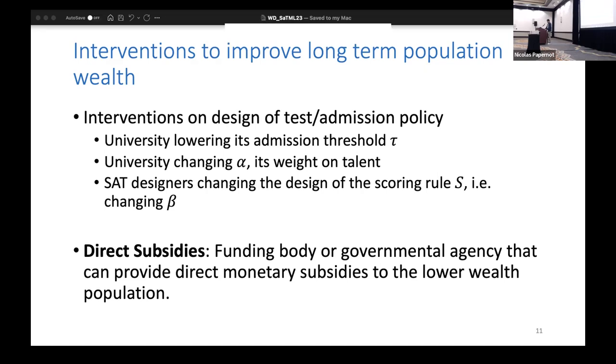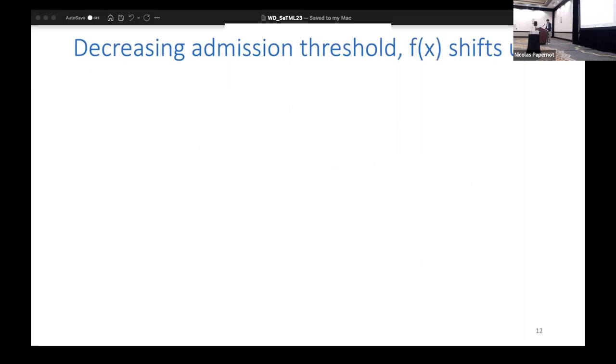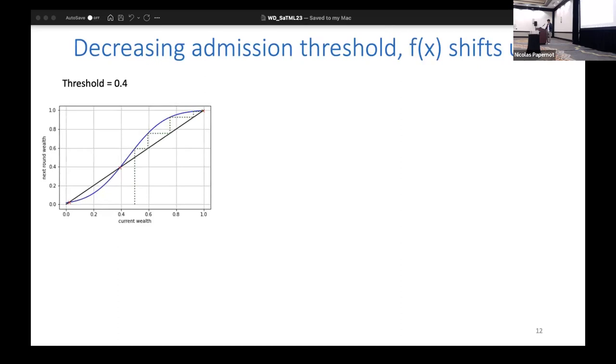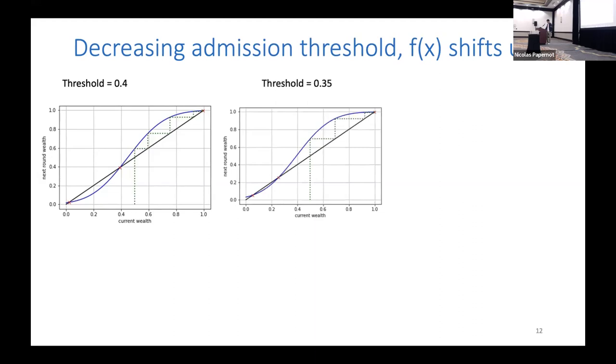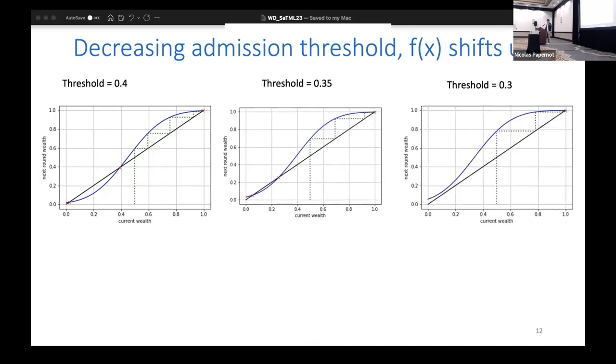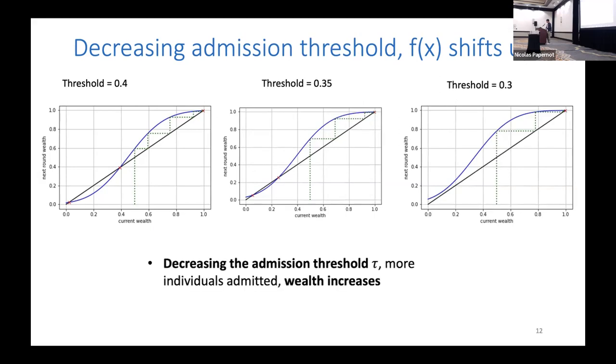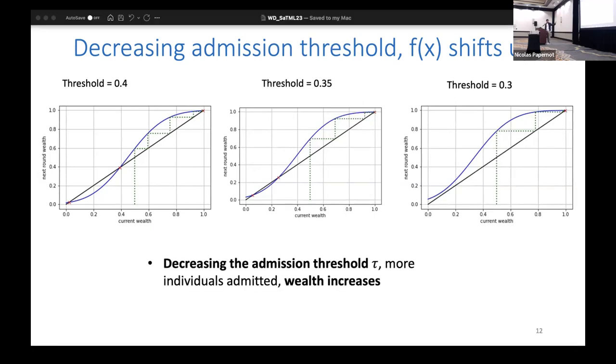What interventions can the university make? It can maybe lower its admission threshold, it can change its weight on talent, and so on. Let me quickly run through what happens if the university decreases its admission threshold, dropping it from 0.4 to 0.35 to 0.3. You can see the wealth update function is shifting upwards. You're ending up from a regime of three fixed points to a single high wealth fixed point, which is good because you can admit more people, the wealth of the whole population is increasing.